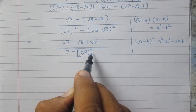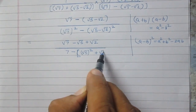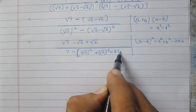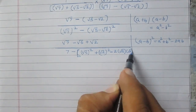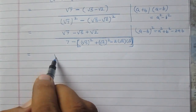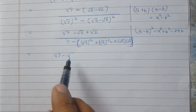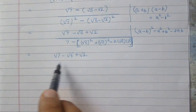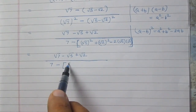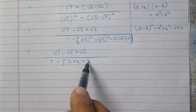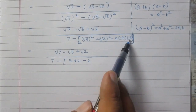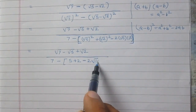Using this identity, we expand: a² is square root 5 squared which is 5, plus b² which is square root 2 squared giving 2, minus 2 times square root 5 times square root 2. The product of square root 5 and square root 2 is square root 10, so we write it as 2 times square root 10.